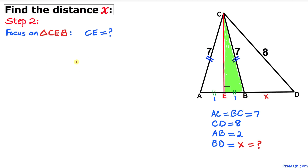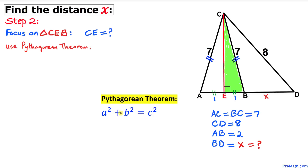Our next step is to focus on right triangle CEB and calculate the distance CE. Since this is a right triangle, we are going to use the Pythagorean theorem: A squared plus B squared equals C squared. Let me label the horizontal side as A, the vertical side as B, and the longest leg as C.